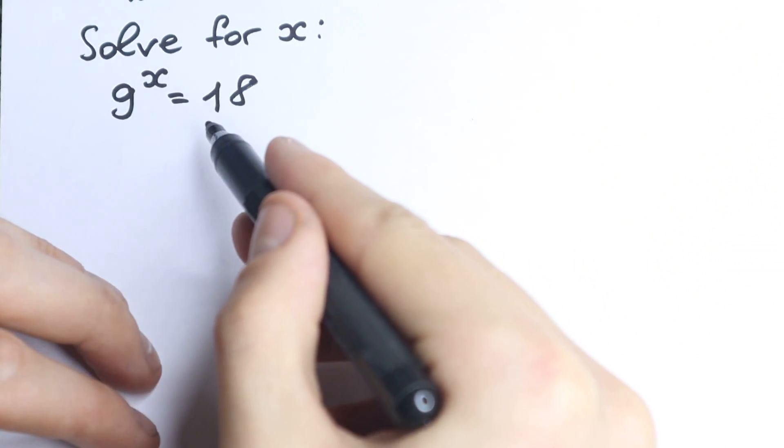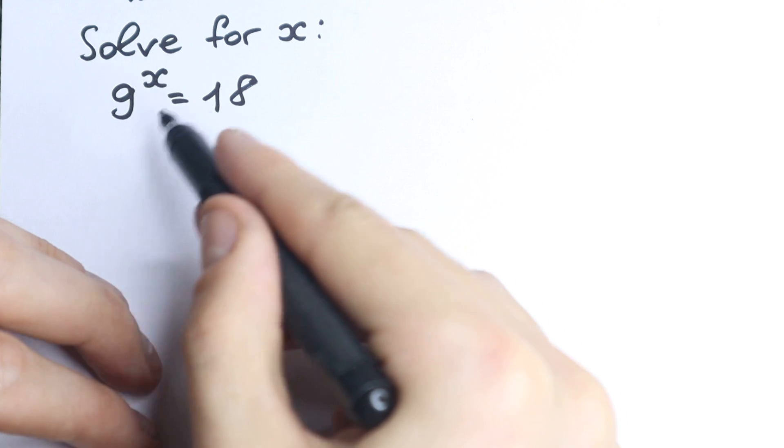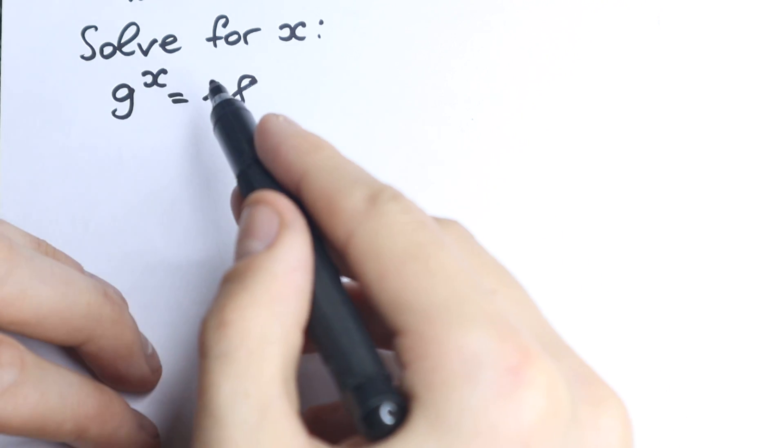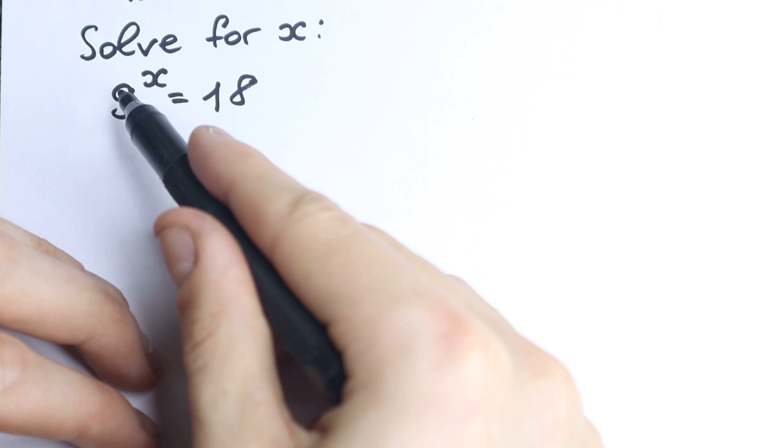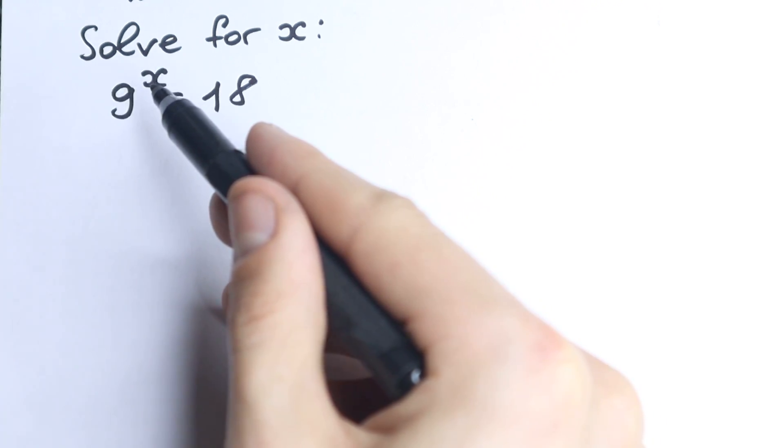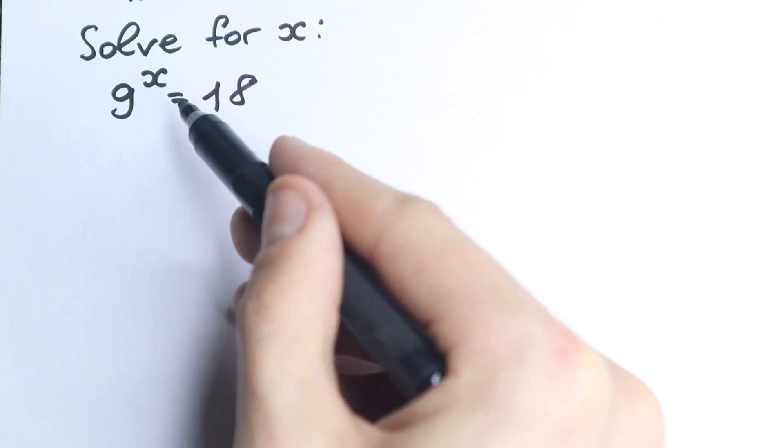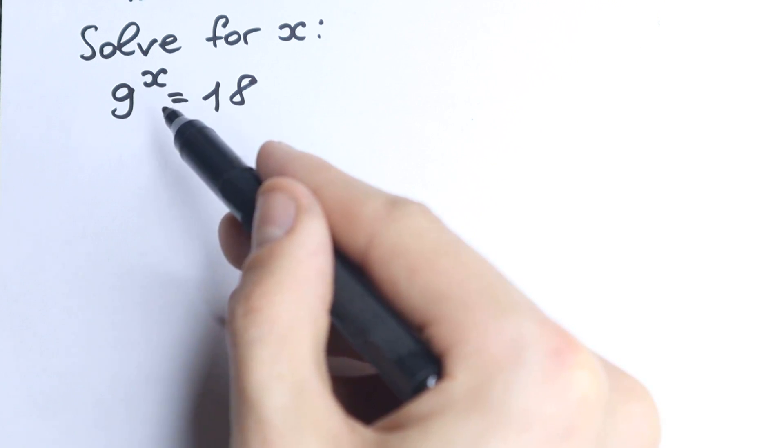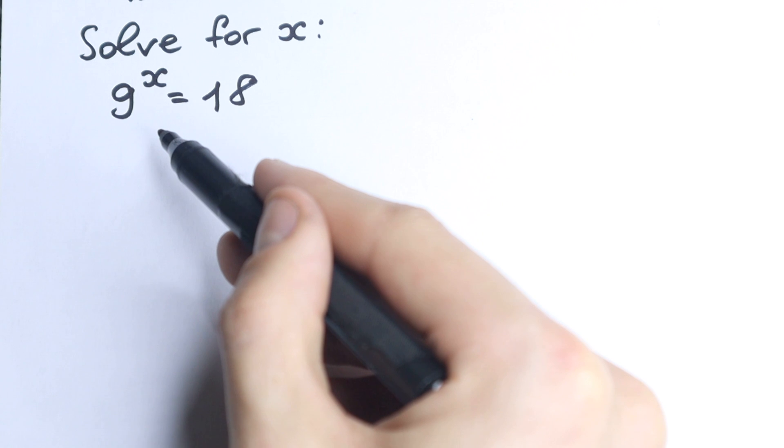I wanted to record this quick video to solve this problem because a lot of students make this mistake. They think that x equals 2—somehow we have 9, 2, we have 18. So many students think that 2 is the correct answer. This is the main common mistake, but the answer is completely different, and I wanted to record this video.